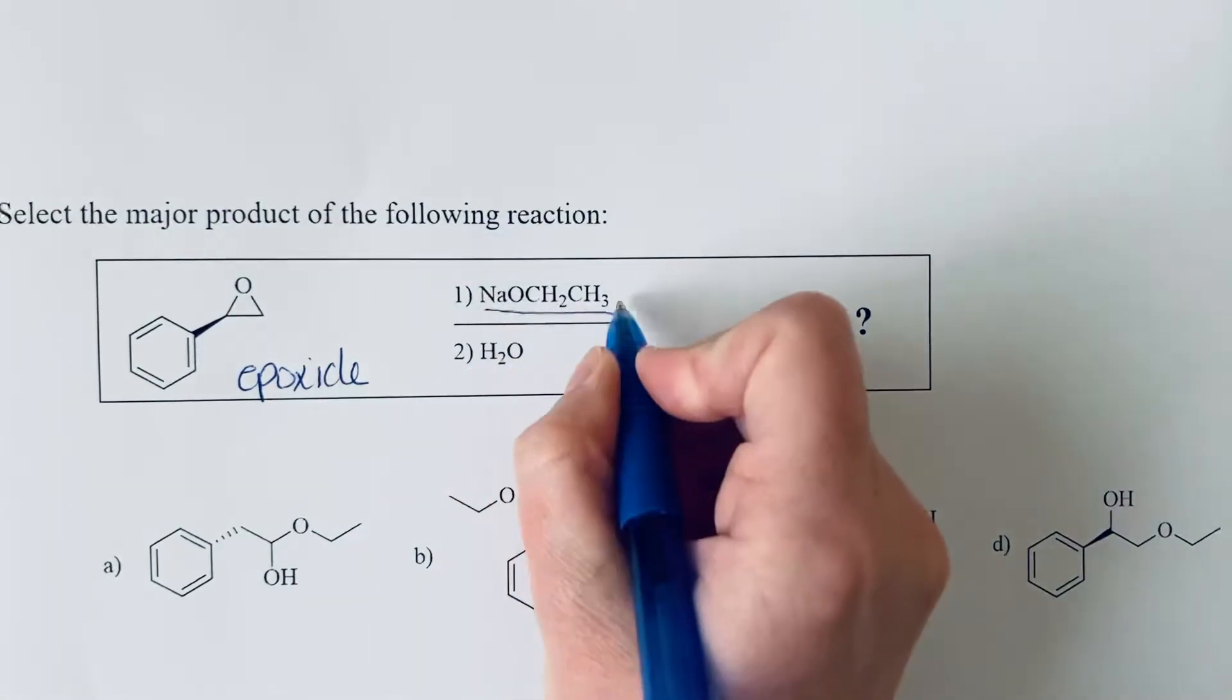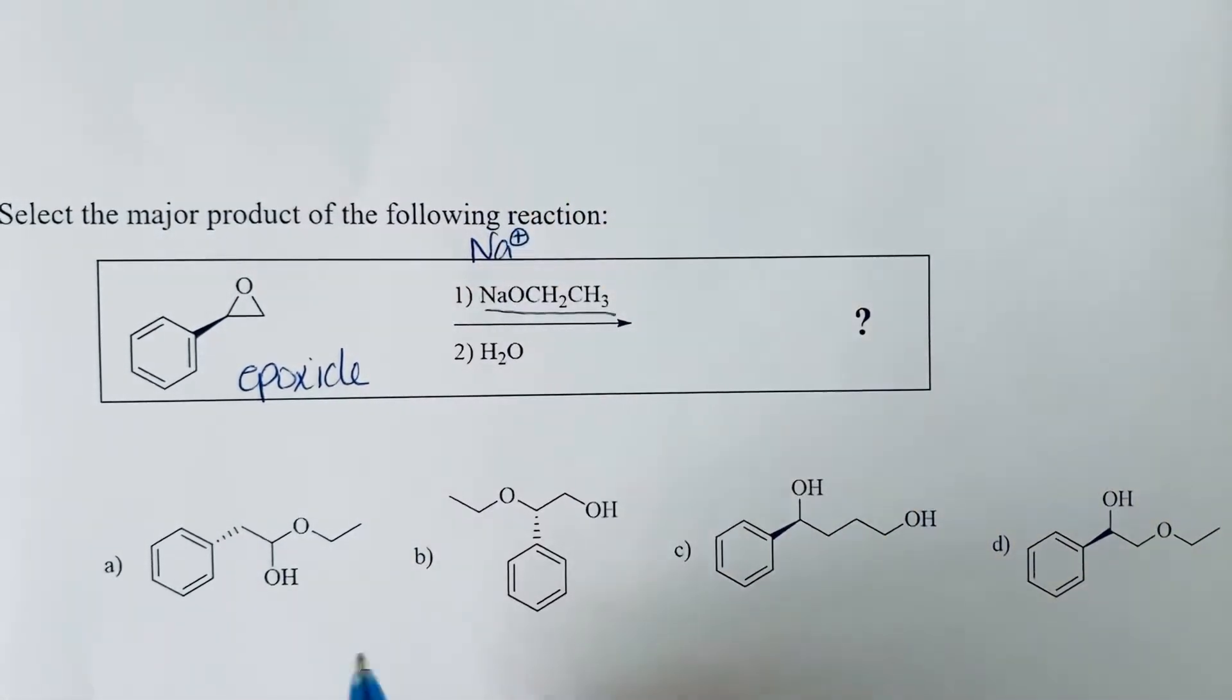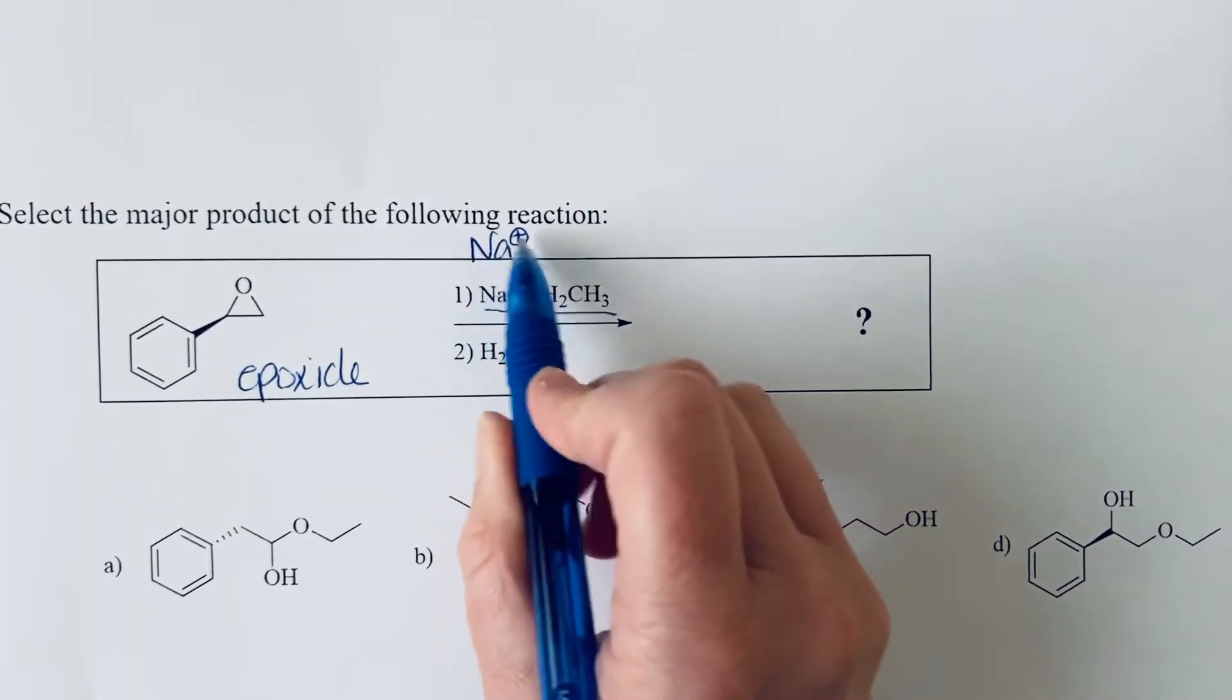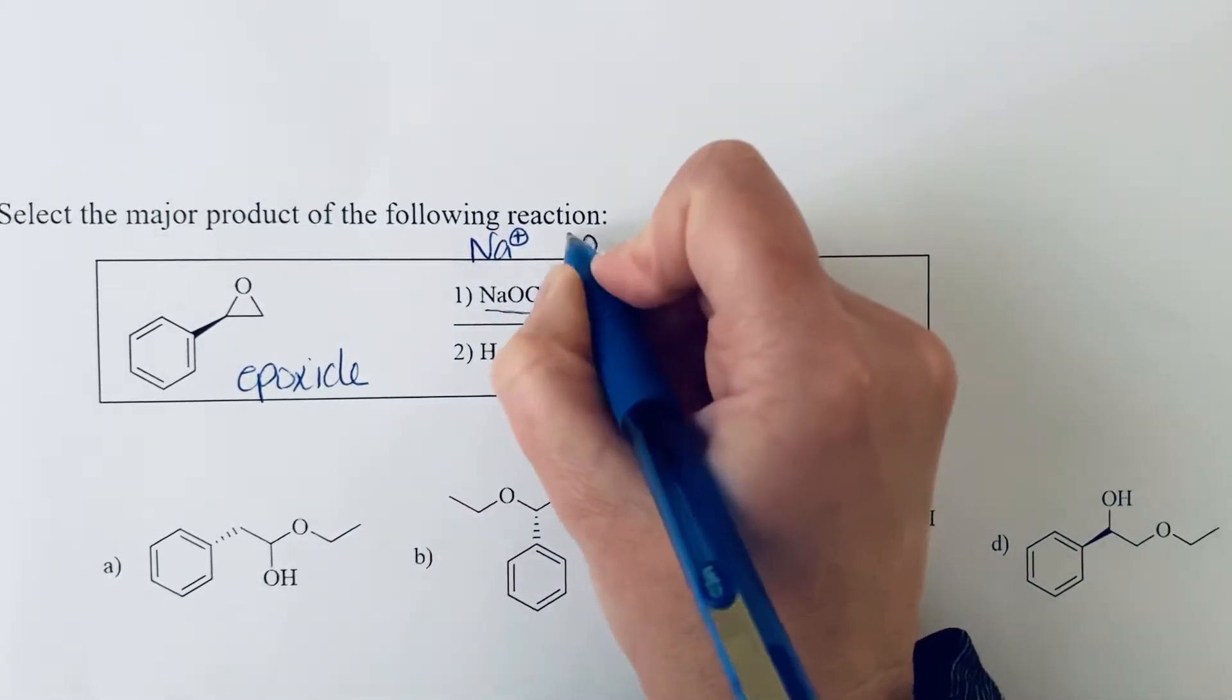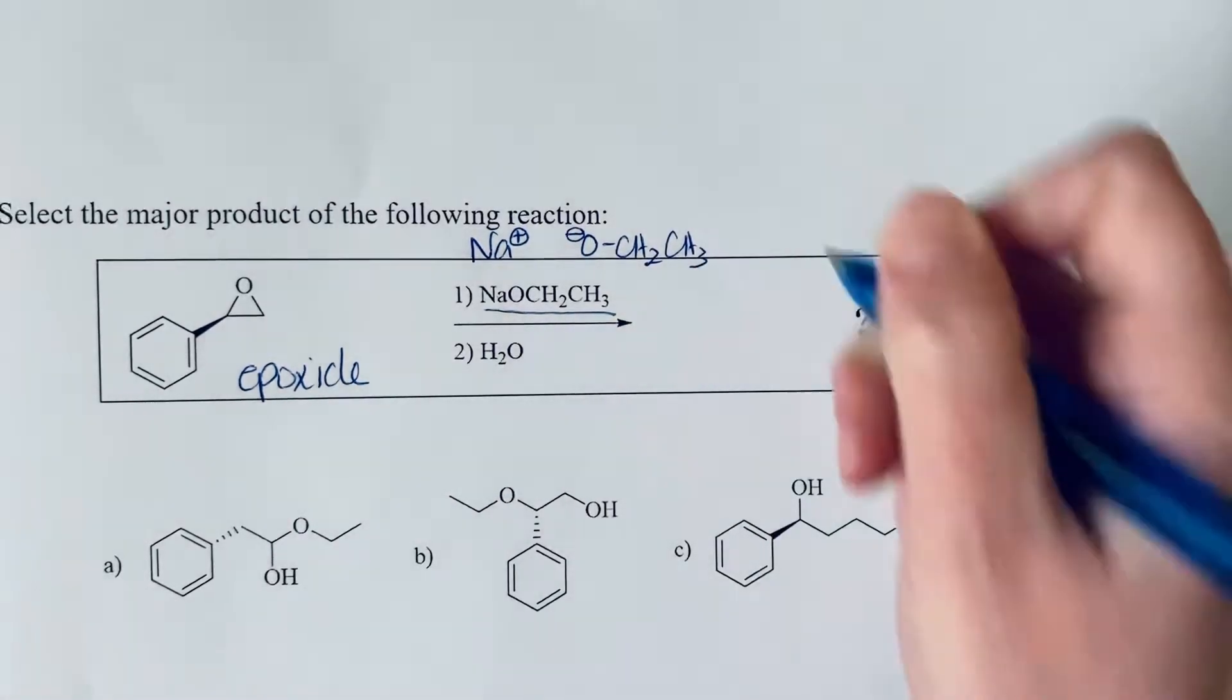we can see that this is sodium ethoxide, sodium plus. The presence of that sodium tells us that this is a salt, and sodium is positive one. Whatever is attached to it has a negative one charge. We have the ethoxide, and this is a base.